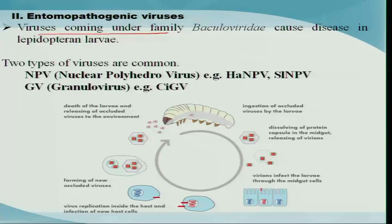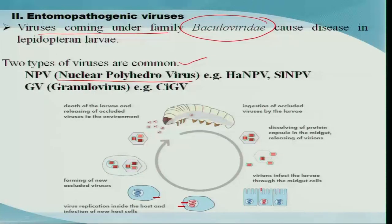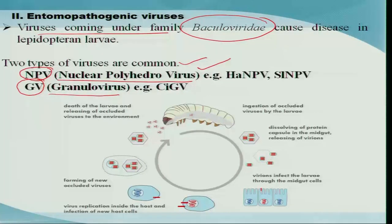Now let us go to another important biocontrol agent: entomopathogenic viruses. Viruses especially under the family Baculoviridae are effective against insects and have been widely exploited. There are two types: nuclear polyhedrosis viruses, referred to as NPV, and granuloviruses, referred to as GV. Among these two, NPV is the most effective and quite widely used; its production and application are now commonly done.